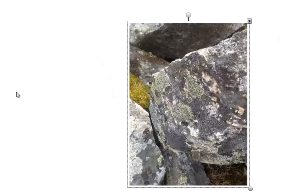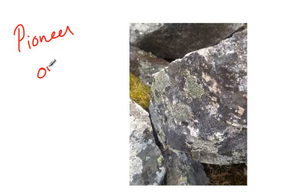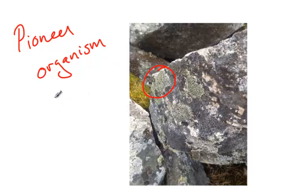The first step in ecological succession is what we call pioneer organisms — those are the organisms that are the first to move in. You can think of them just like the pioneers coming out west. Right here we have an organism called a lichen.